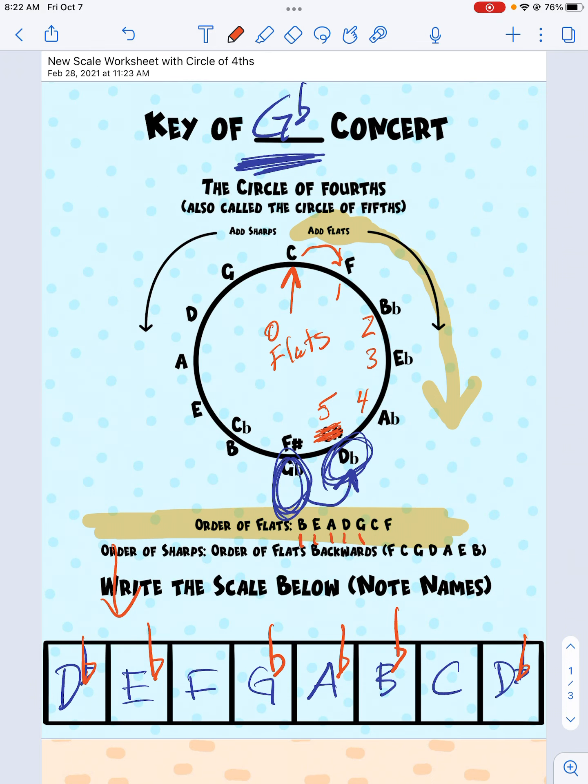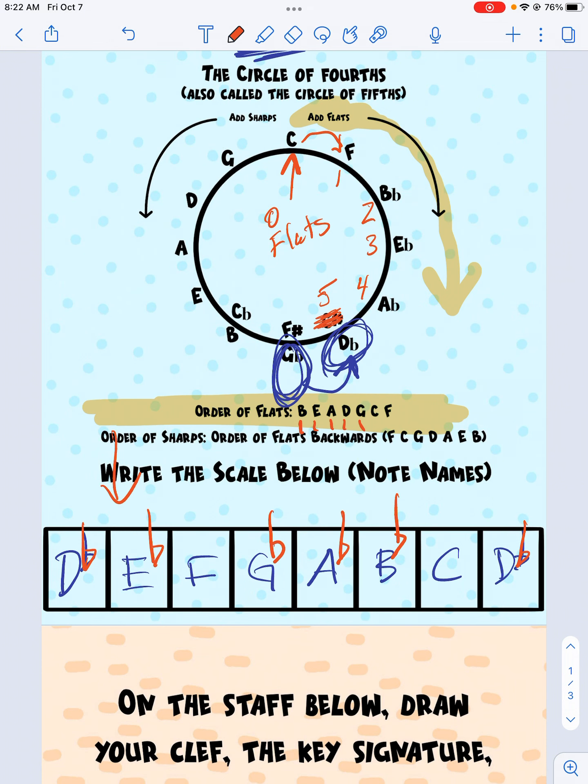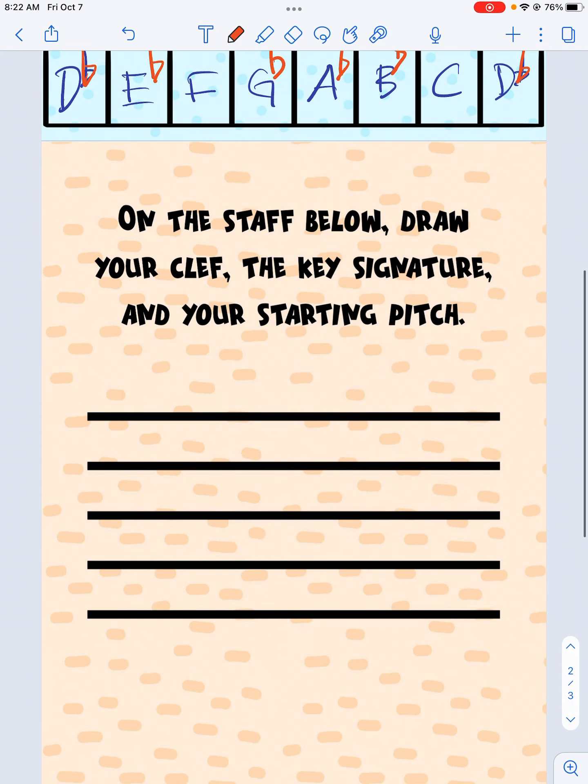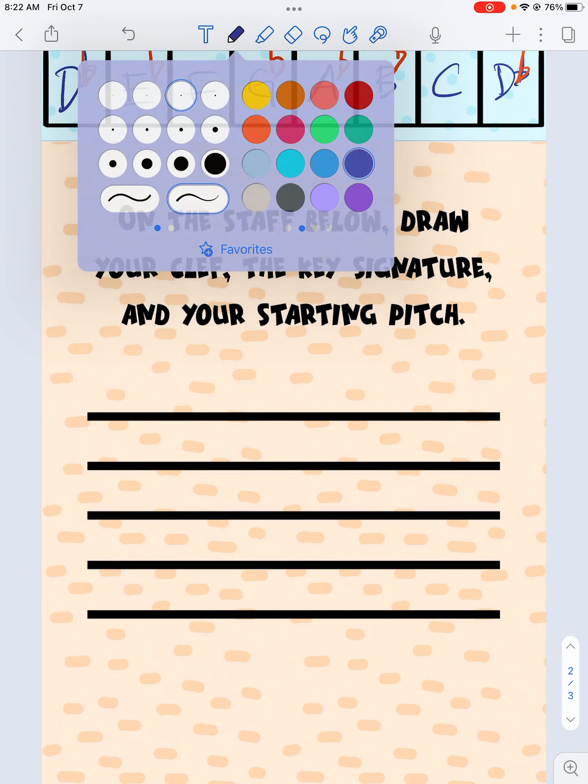There's my five flatted notes. B, E, A, D, and G. So now I know letter names. I know flats. Now I've got to figure out where's my starting pitch. So I'm going to go to the next page, draw a key signature.